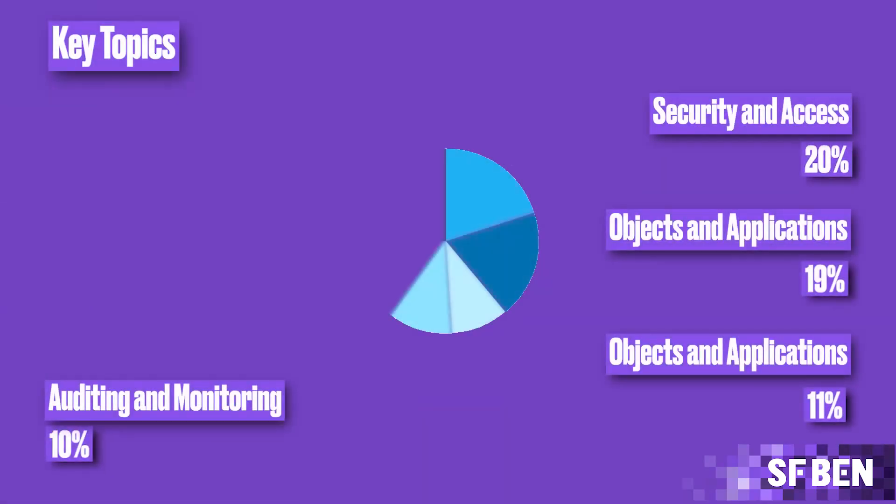Cloud Applications is our next section, coming in at 11%. As you might have guessed, this section will test your knowledge of Sales Cloud and Service Cloud. For the Sales Cloud questions, you will need to understand how to set up products, as well as the related objects needed in practice, such as price books and price book entries. You should also understand how product schedules are configured and how to grant access to price books. The rest of this section covers quotes and forecasting.